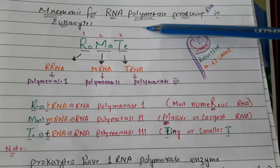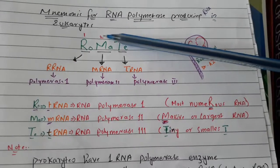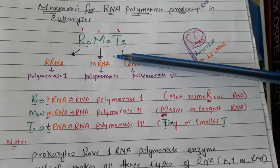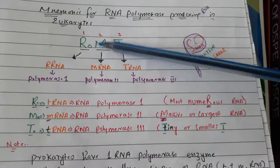Today we'll talk about the mnemonics for RNA polymerase which produce different types of RNA in eukaryotes. I made a mnemonic and the mnemonic is ROOMATE. You say R-O-M-A-T-E, or just say ROOMATE.